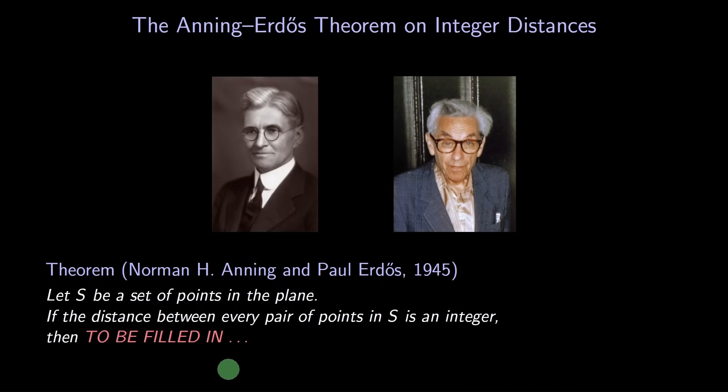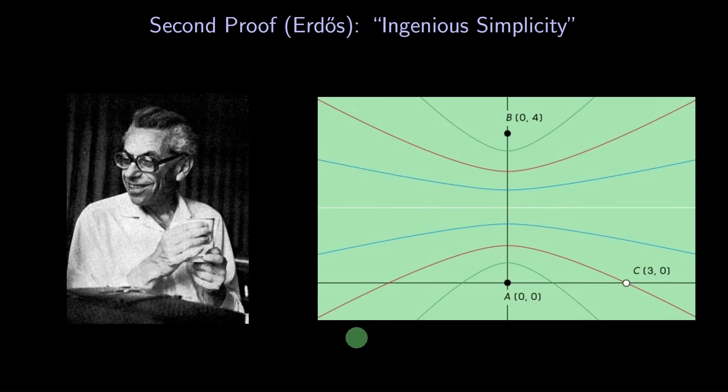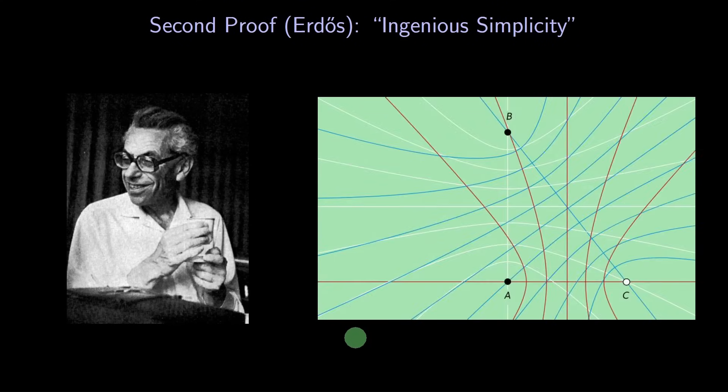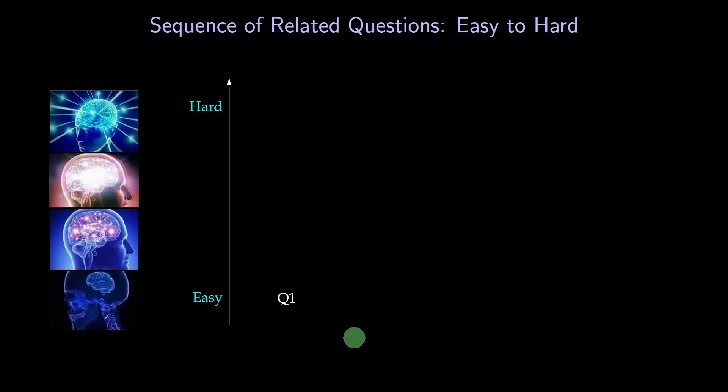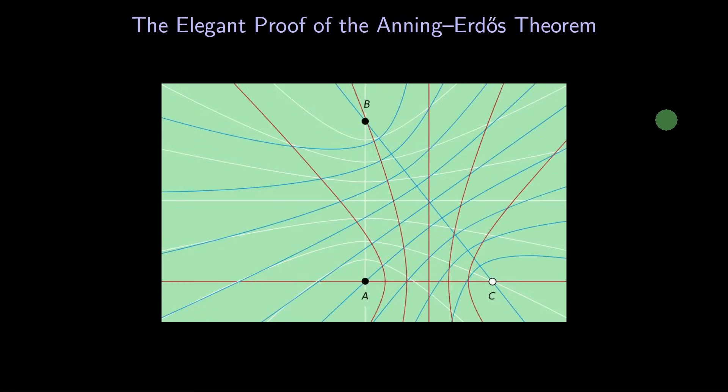Their proof was a little messy, but soon after, Erdős himself figured out a brilliant proof. I knew Erdős while he was alive, and he was indeed brilliant. In this video, I'll share with you his elegant proof. We'll actually go over seven questions related to integer distances. We'll start off easy, and then move to harder questions. In the second half, we'll go through the beautiful proof of the Anning-Erdős theorem. Are you ready? Let's go.